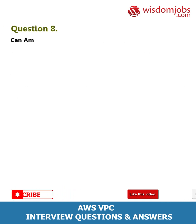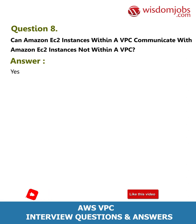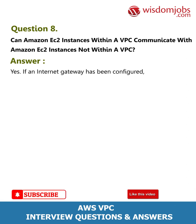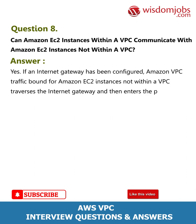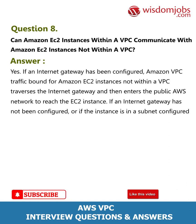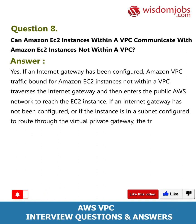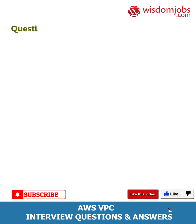Question 8: Can Amazon EC2 instances within a VPC communicate with Amazon EC2 instances not within a VPC? Answer: Yes. If an internet gateway has been configured, Amazon VPC traffic bound for Amazon EC2 instances not within a VPC traverses the internet gateway and then enters the public AWS network to reach the EC2 instance. If an internet gateway has not been configured, or if the instance is in a subnet configured to route through the virtual private gateway, the traffic traverses the VPN connection, egresses from your data center, and then re-enters the public AWS network.